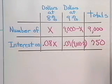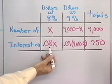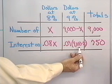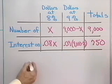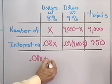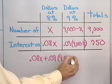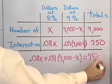So, I can write my equation this way. The amount of interest earned on the X dollars at 8% plus the amount of money earned on the 9,000 minus X dollars at 9% has to come out to be 750. I'm just simply going to take 0.08X plus 0.09 times 9,000 minus X, and that has to add up to $750.